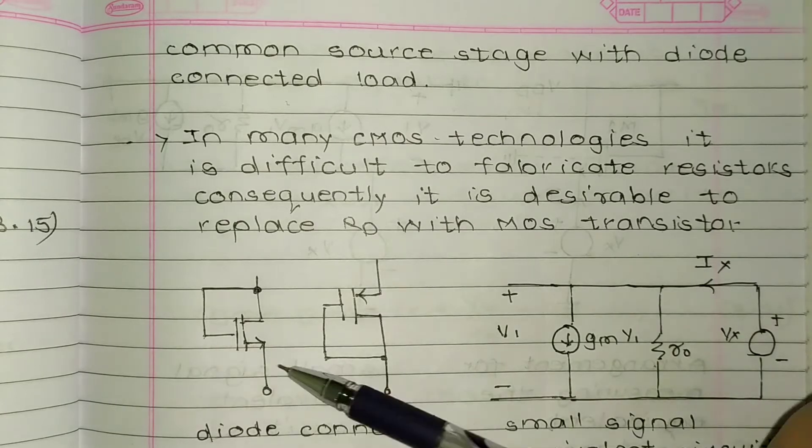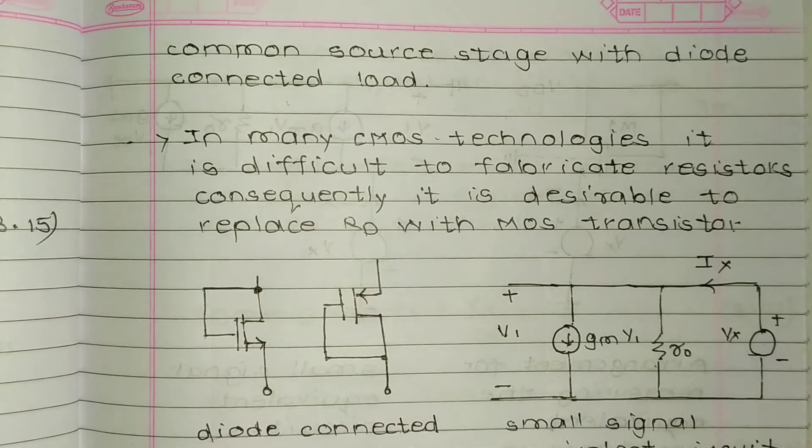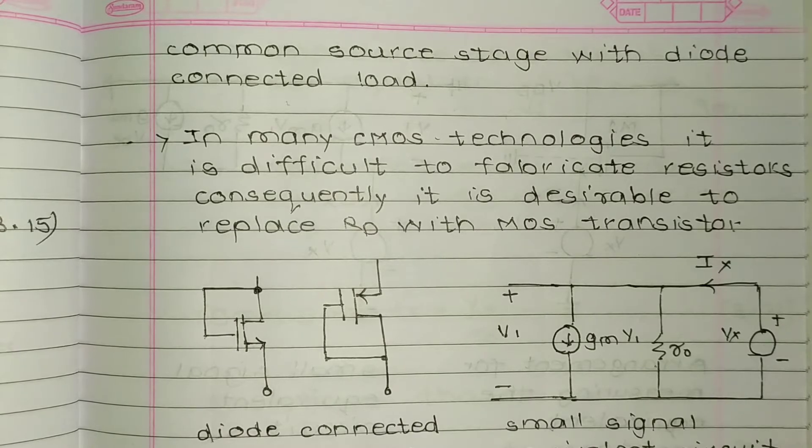This is NMOS, this is PMOS. It was possible for a MOSFET to scale down, but it was not possible for a resistor to scale down because the resistor was a physical device and reduction of its size was not possible.